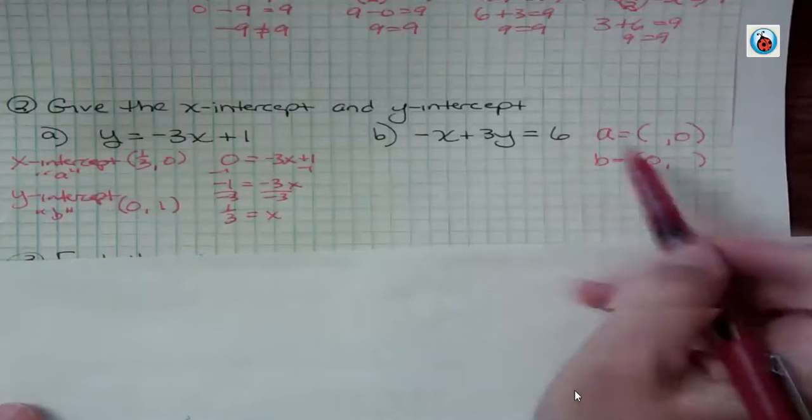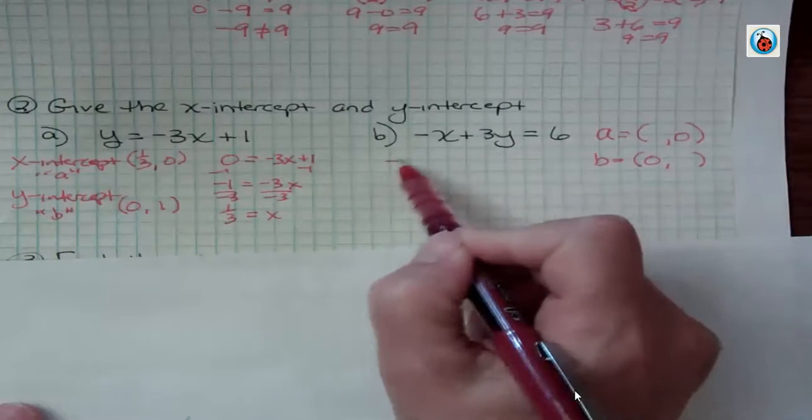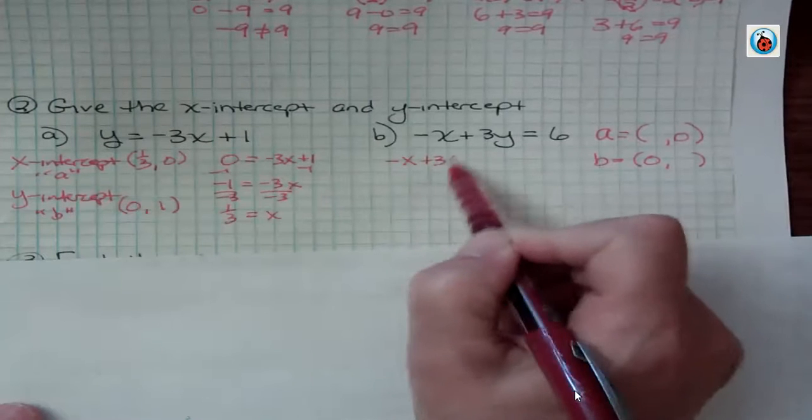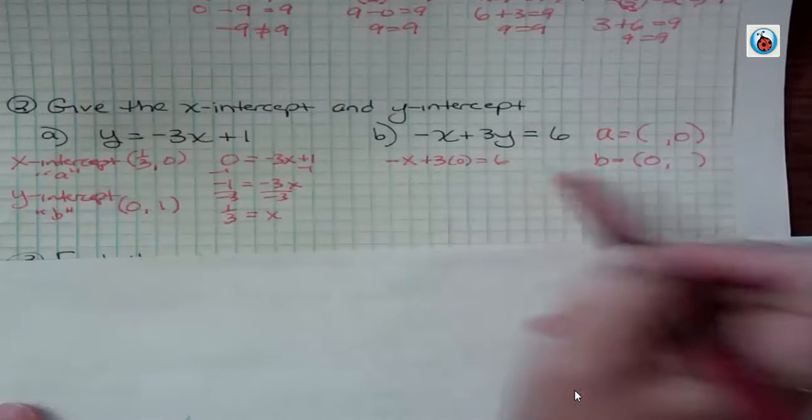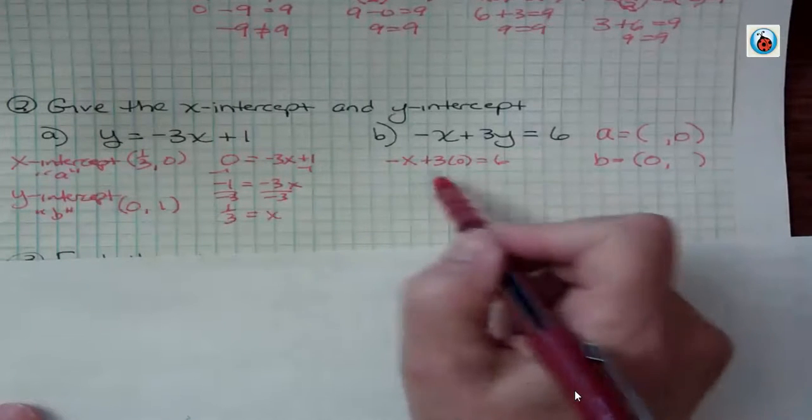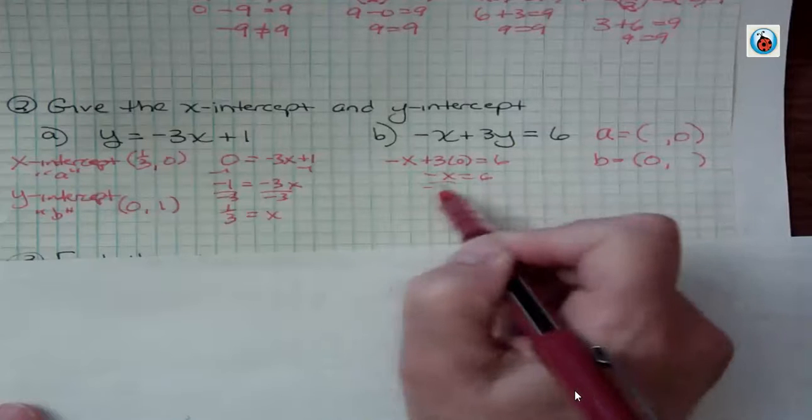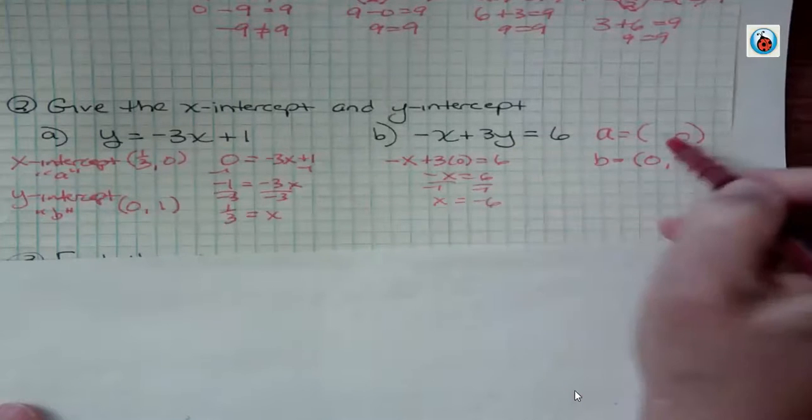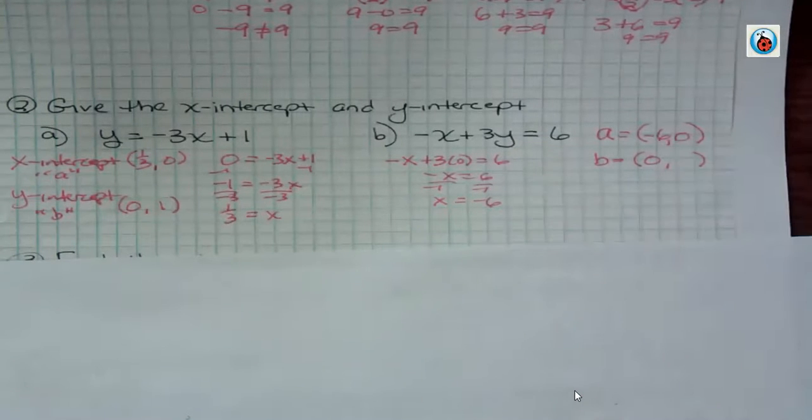And so if y is 0, negative x plus 3 times 0 is 6. Negative x is 6. Be careful with your negatives here. x is negative 6. So I have an x-intercept of negative 6.